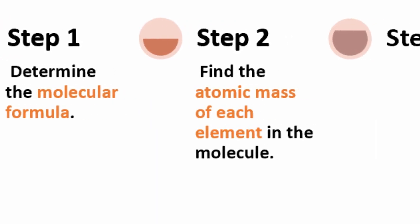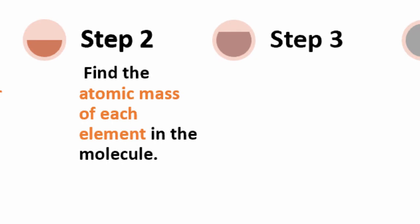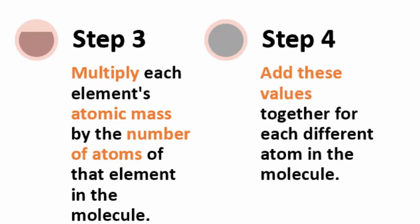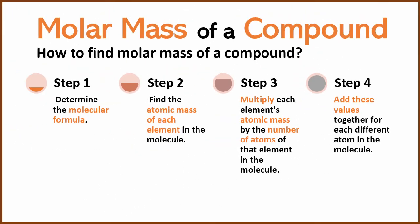Second step: we find the atomic mass of each element in the molecule from the periodic table. Third step: we find the number of atoms of each element. Multiply each element's atomic mass by the number of atoms, and that gives you the contribution by that element. Final step: we add all these values.